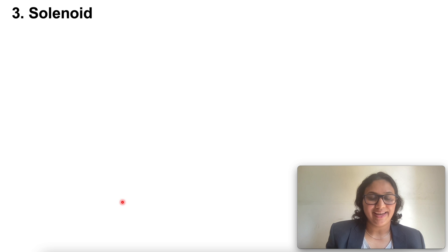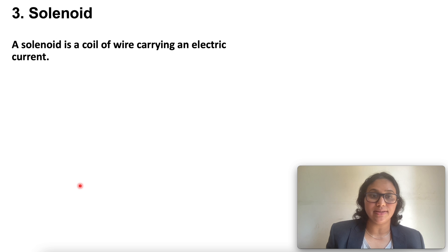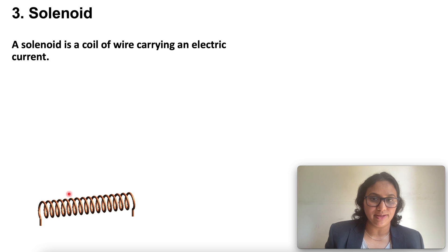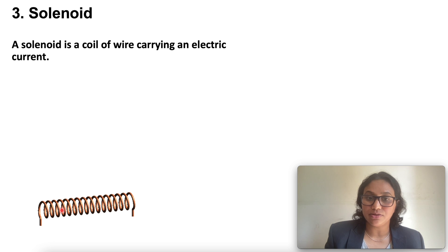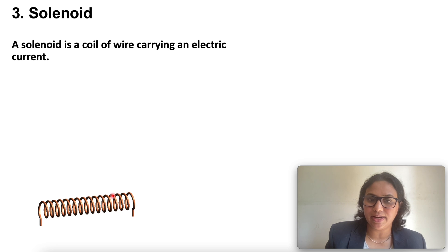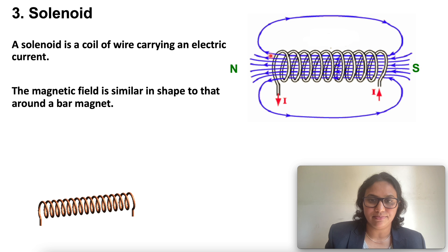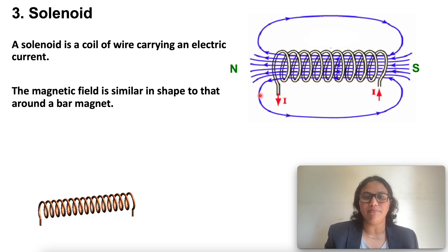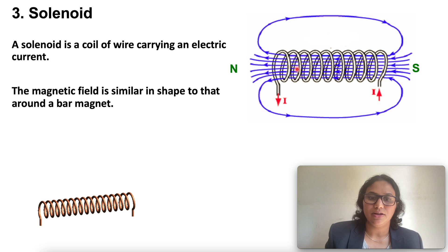Next is the solenoid. A solenoid is a coil of many circular turns of insulating copper wire wrapped in the shape of a cylinder carrying an electric current. The pattern of the magnetic field lines around the current carrying solenoid is shown in the figure. Compare the pattern of the field with the magnetic field around a bar magnet — they look similar.